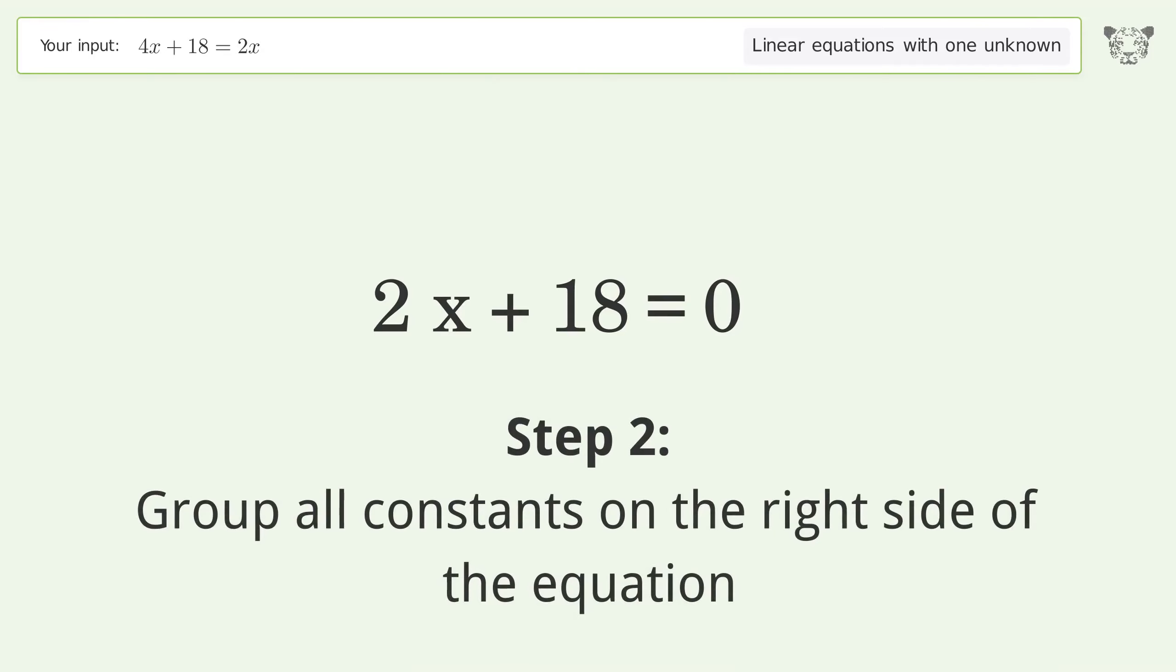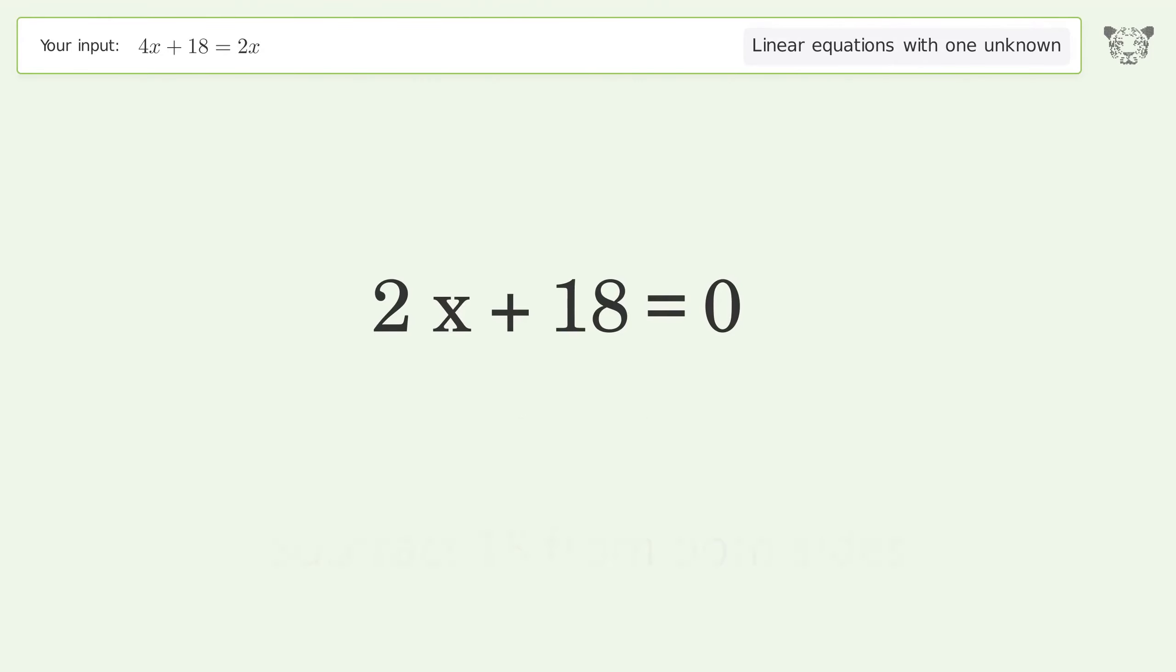Group all constants on the right side of the equation. Subtract 18 from both sides. Simplify the arithmetic.